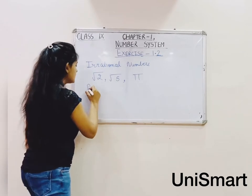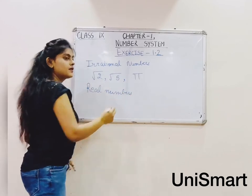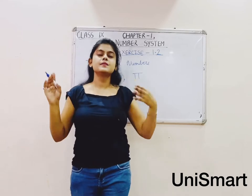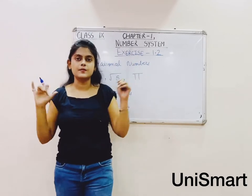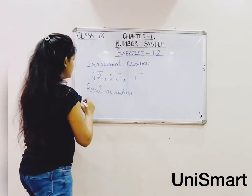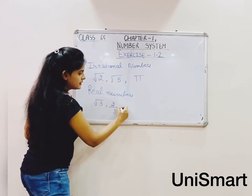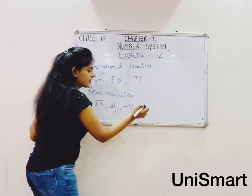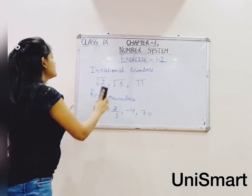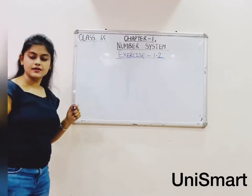Next we have real numbers. Real numbers are those numbers that include whole numbers, natural numbers, integers, rational numbers, and irrational numbers. Real numbers are a collection of all numbers — like root 5, 2/3, minus 4, 70, and so on.